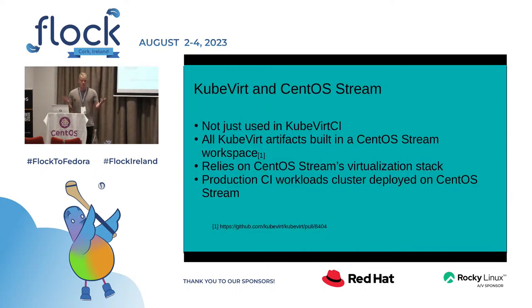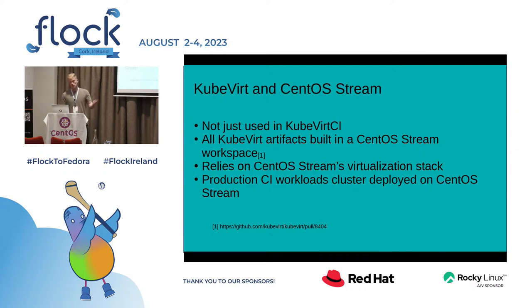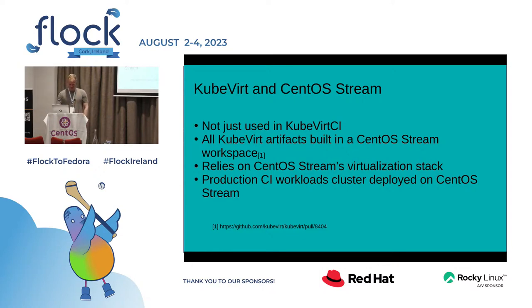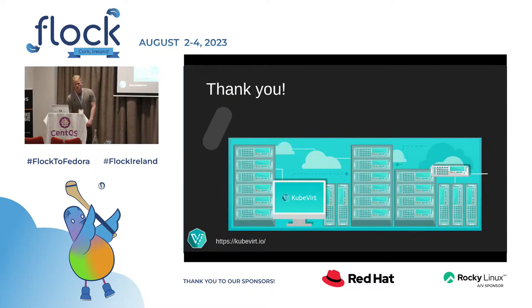Just to conclude — KubeVirt loves CentOS Stream. It's not just KubeVirt CI using it; it's used all over KubeVirt. All of our KubeVirt artifacts are built in a CentOS Stream workspace. KubeVirt actually relies on the CentOS Stream virtualization stack — we take LibVirt and QEMU from the CentOS Stream 9 repos and build those into our VirtLauncher pods, which are the components actually starting up VMs in the Kubernetes cluster, so that's all Stream 9 virtualization stack. Our production CI workloads cluster was deployed on CentOS Stream until very recently, and unfortunately the burden of maintaining OS updates and Kubernetes updates on that cluster was too much, so we moved to OpenShift. The updates were on me to do, so it was too much. Thank you to the CentOS community — and if there are any questions.